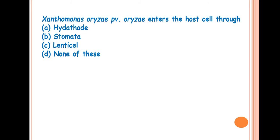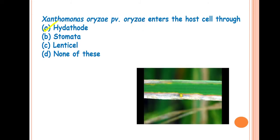Next question is, Xanthomonas oryzae pathovar oryzae enters the host cell through? The answer is hydathodes. Xanthomonas oryzae pathovar oryzae is the causal agent of BLB or bacterial leaf blight of rice. This bacteria enters into the host cell through the hydathodes. This is the characteristic symptom of the BLB or bacterial leaf blight of rice.